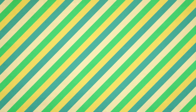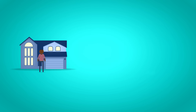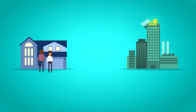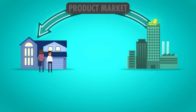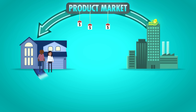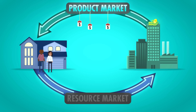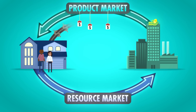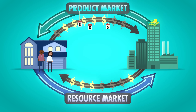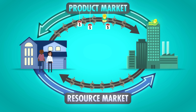A great way to explain a mixed economy is by looking at the circular flow model. A modern economy is made up of households — individuals like you and me — and businesses. Businesses sell goods and services to households in the product market, which is anywhere goods and services are bought and sold. The households need to pay for those goods and services, and they earn the money by selling their resources, like labor, to businesses in the resource market.